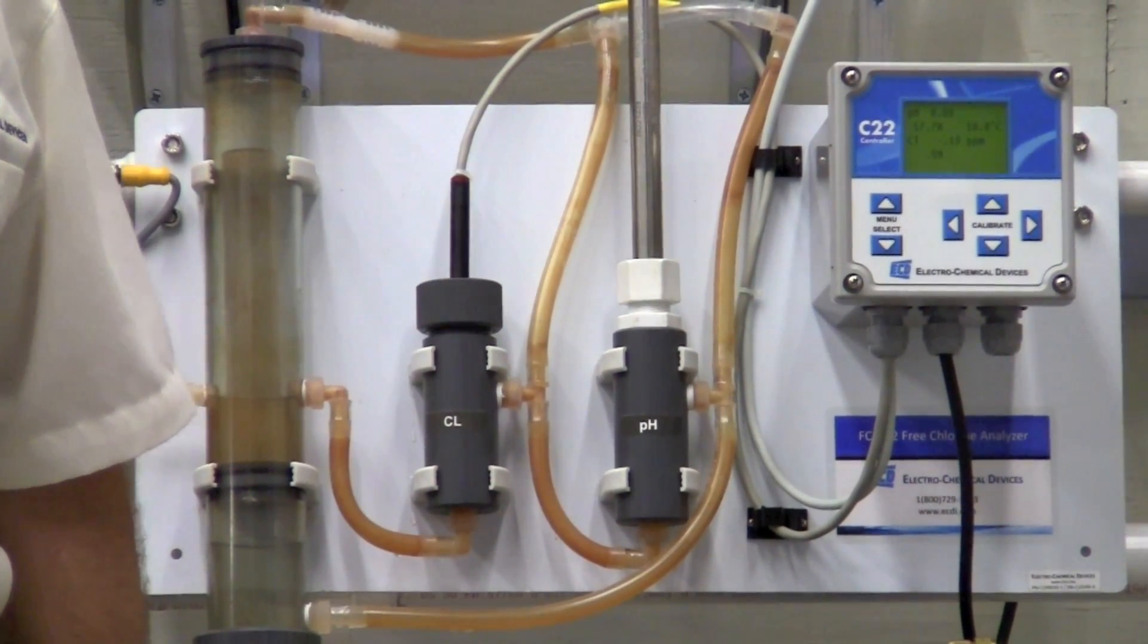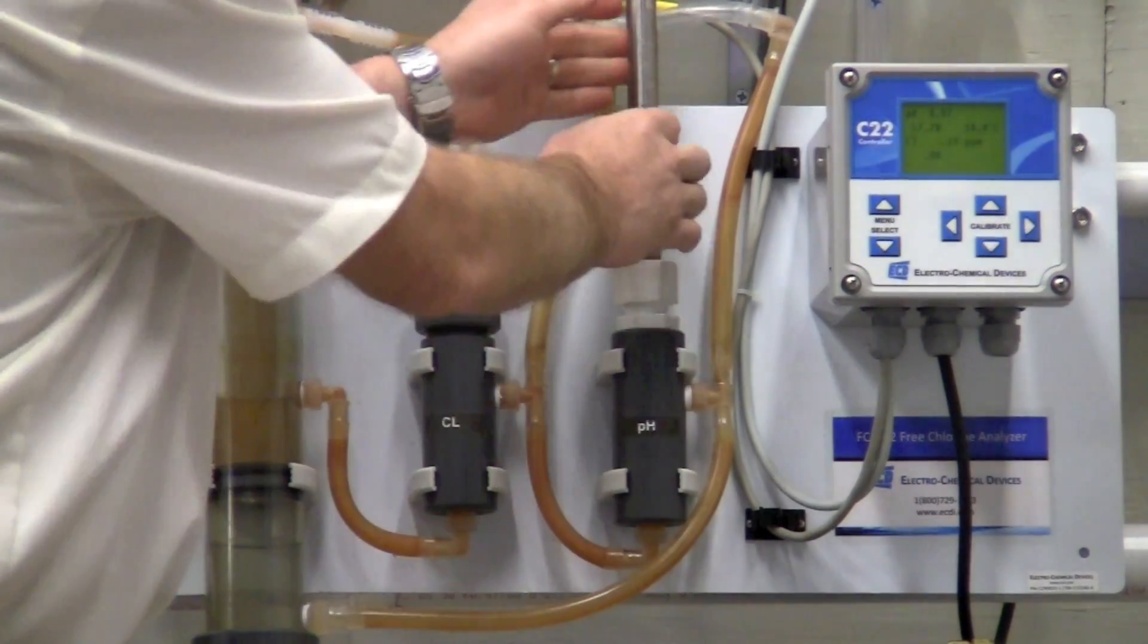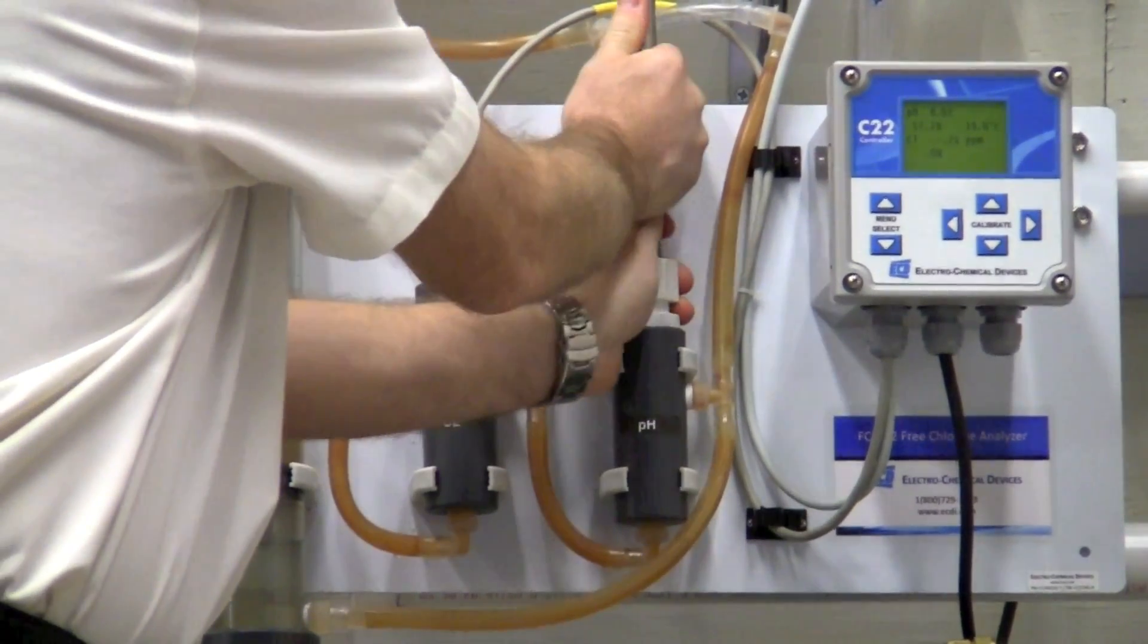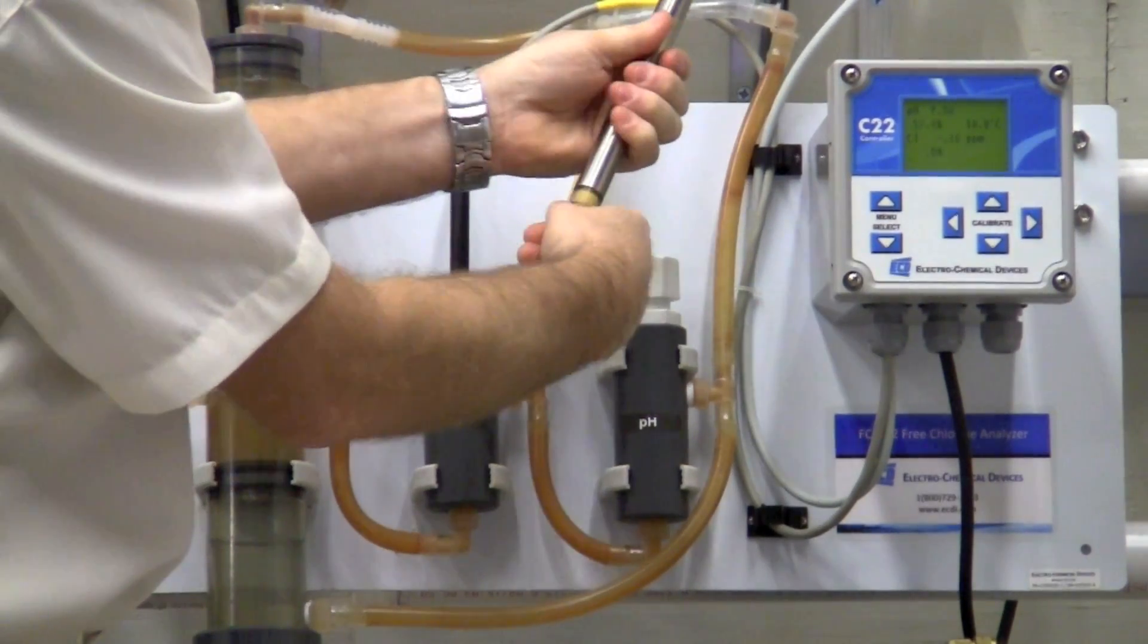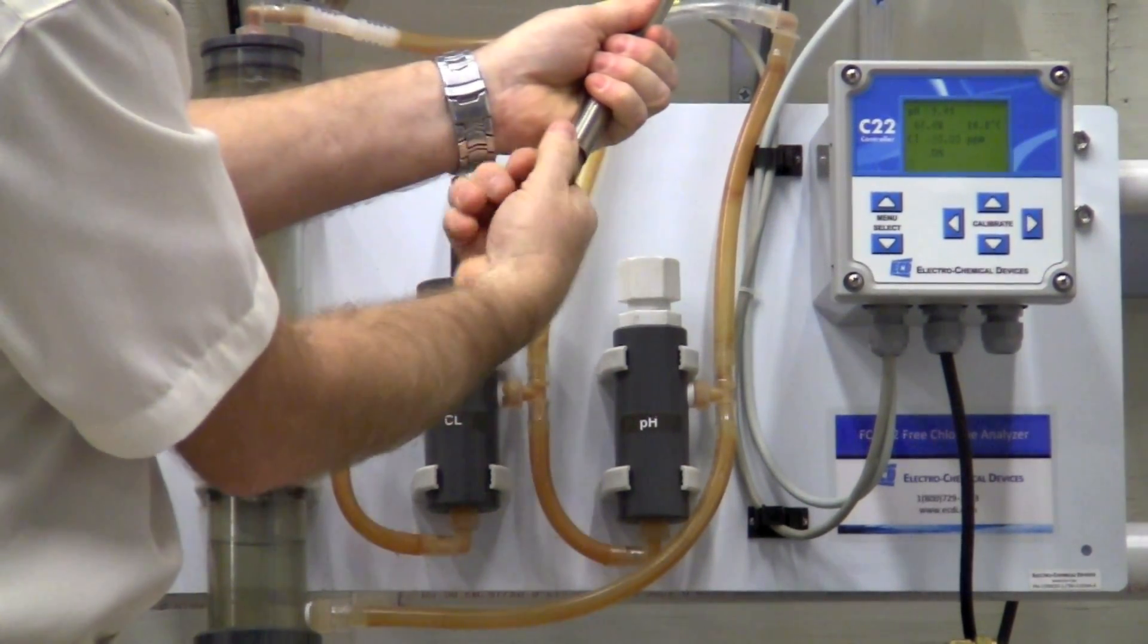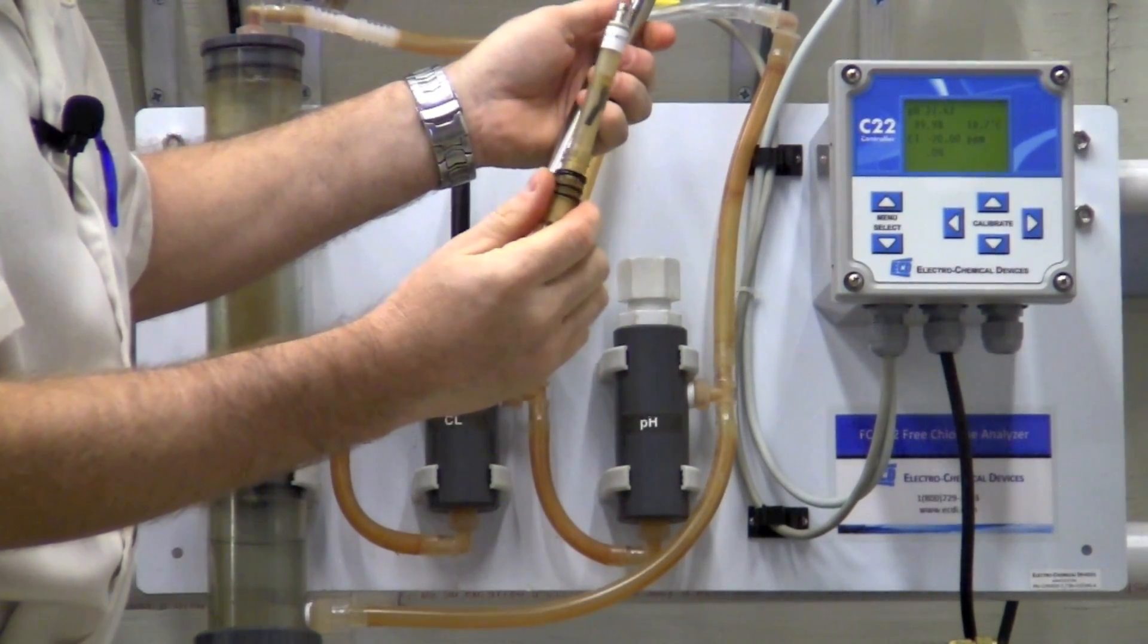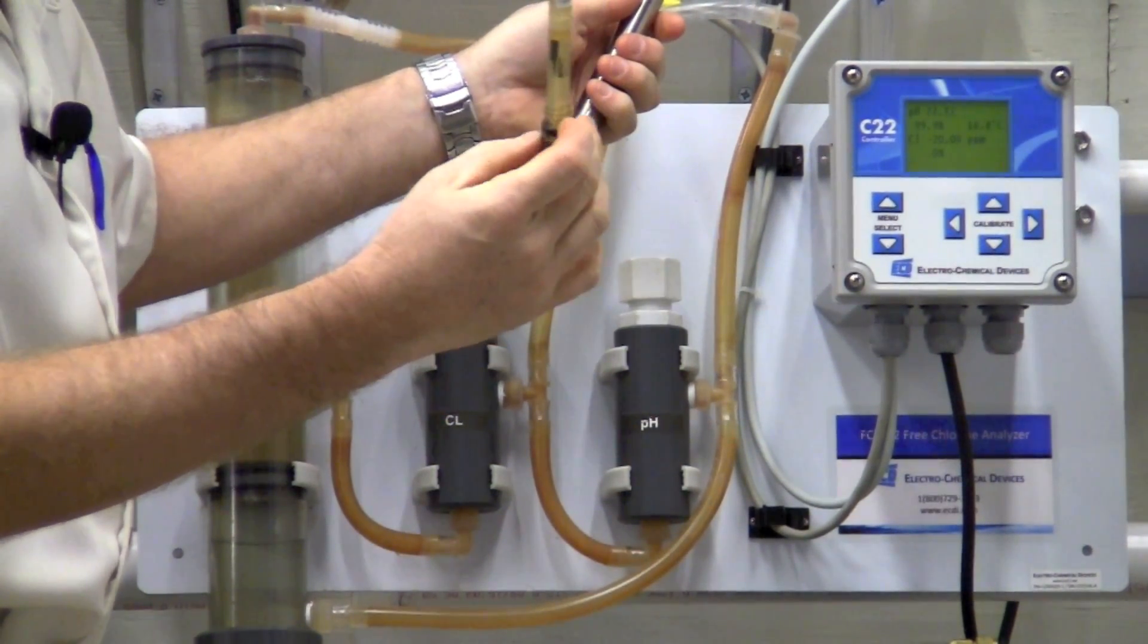Maintenance of the pH sensor is a yearly replacement of the pH electrode. A new pH electrode is one hundred and forty dollars for this general purpose pH electrode.